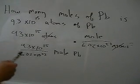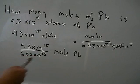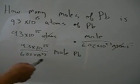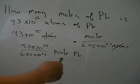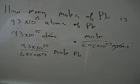Our final answer will be 9.3 times 10 to the 15th power, divided by 6.02 times 10 to the 23rd power, and that will be the moles of Pb that we have.